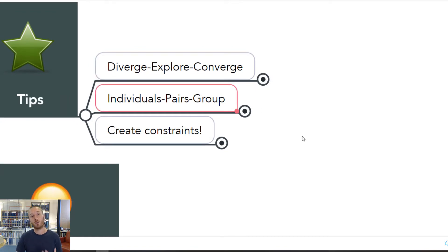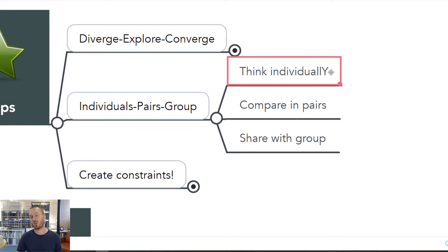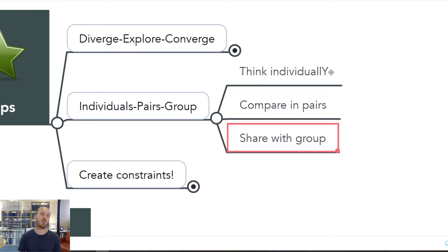If you're working in groups, a useful tip is to always structure the process to work individually, then in pairs, and then as a group. It's tempting to jump straight into group discussions, but what happens then is the first thing that's said tends to steer everybody else's thinking. So it's a really good idea to get people thinking individually and quietly by themselves first, then discuss in pairs if you've got a bigger group, before sharing and discussing as a group. It also means the ideas have been through a couple of little rounds of refining before sharing, and it makes your life easier if you're facilitating.